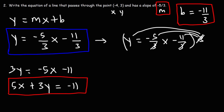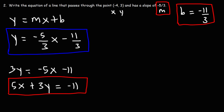Now, how can we write the equation of the line in point-slope form? The formula we need is: y - y₁ = m(x - x₁). That is the equation of the line in point-slope form. All you need is a point and a slope, which we already have in this problem.